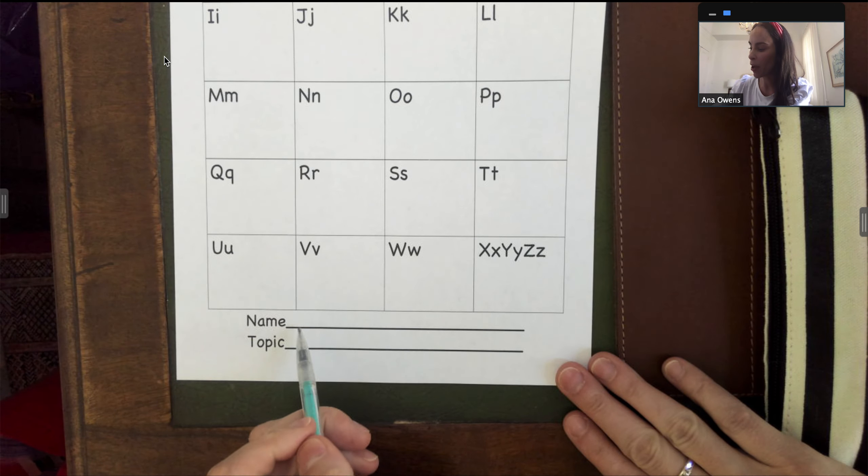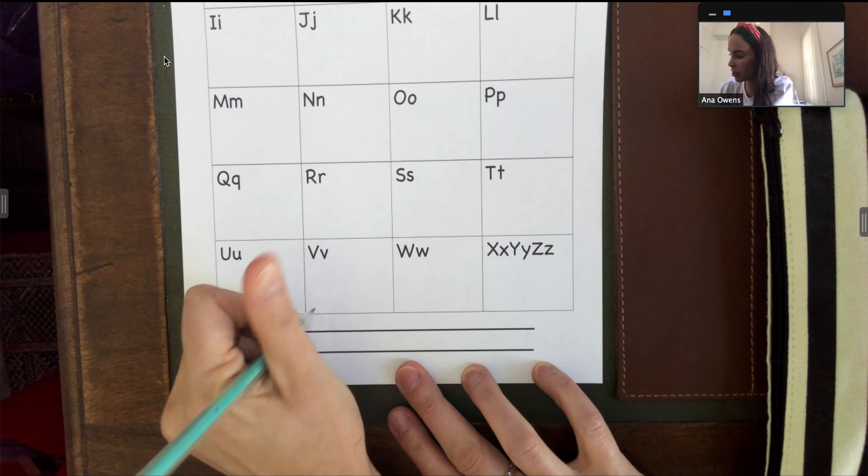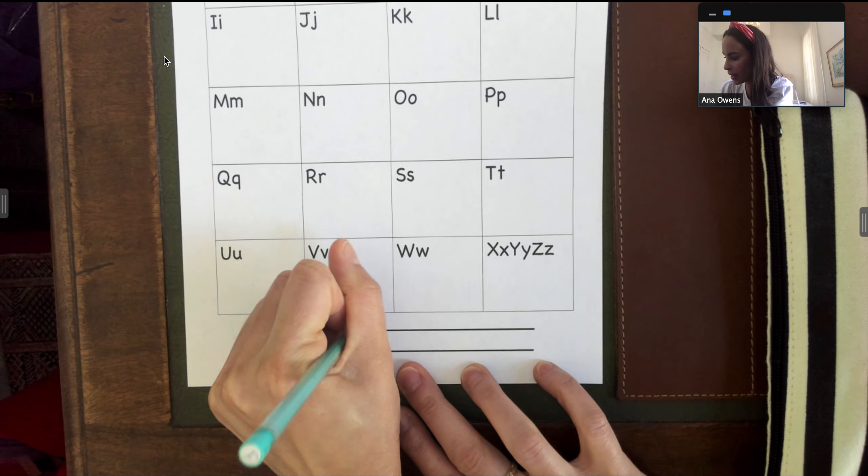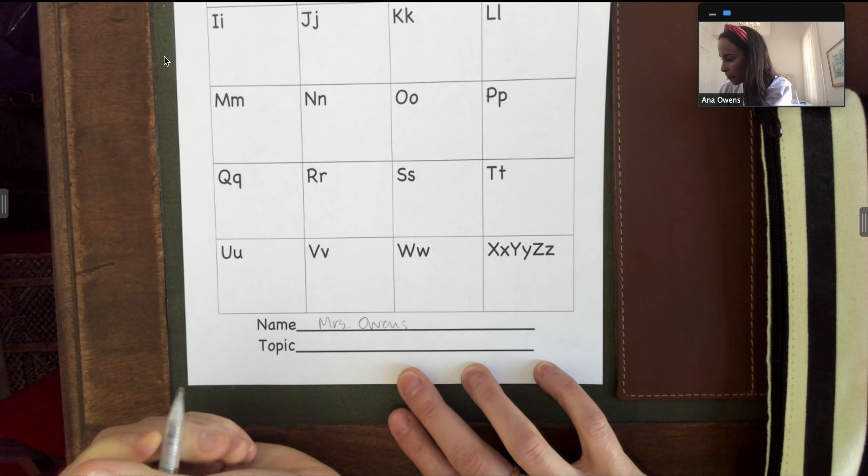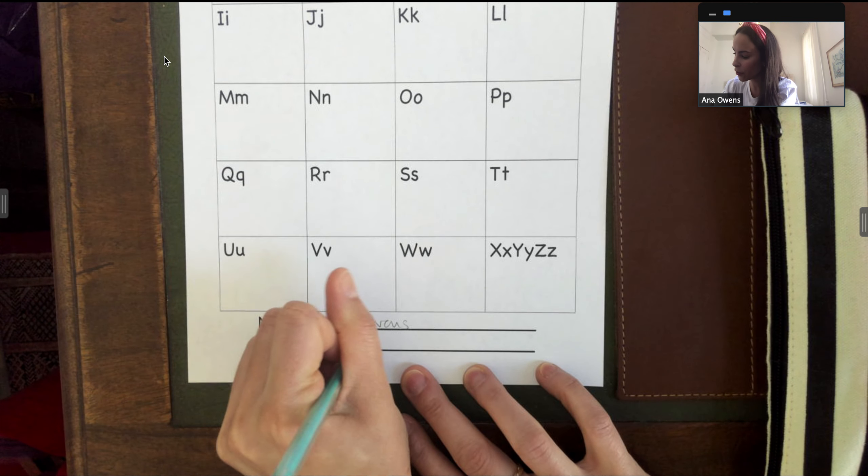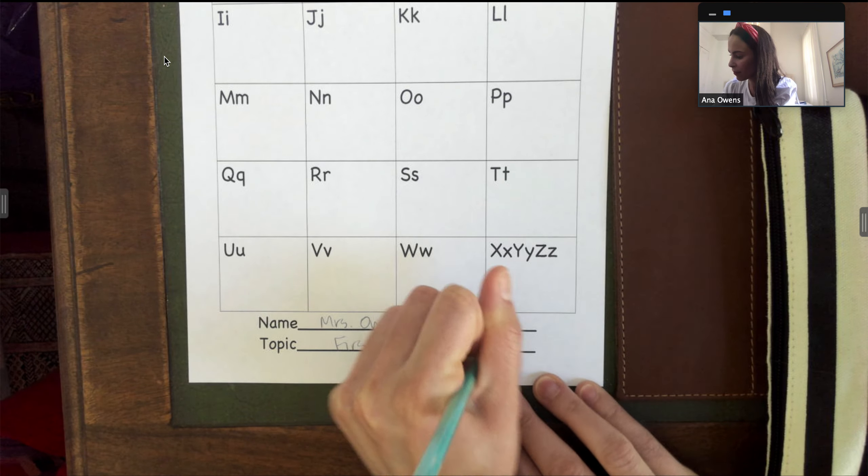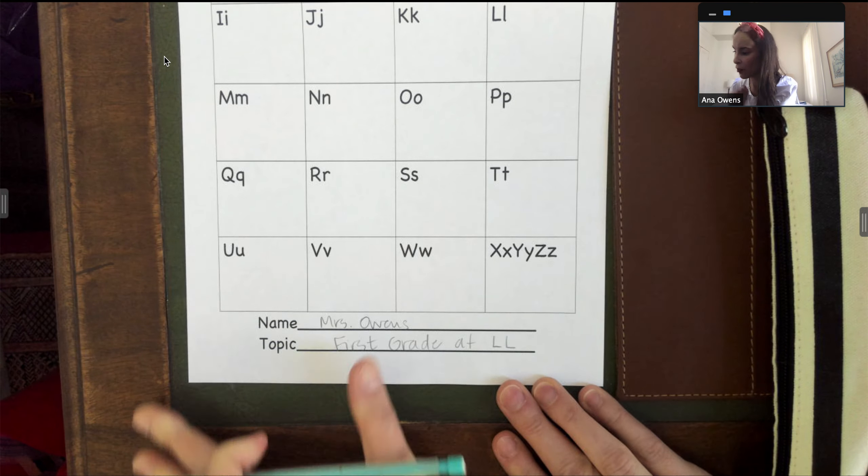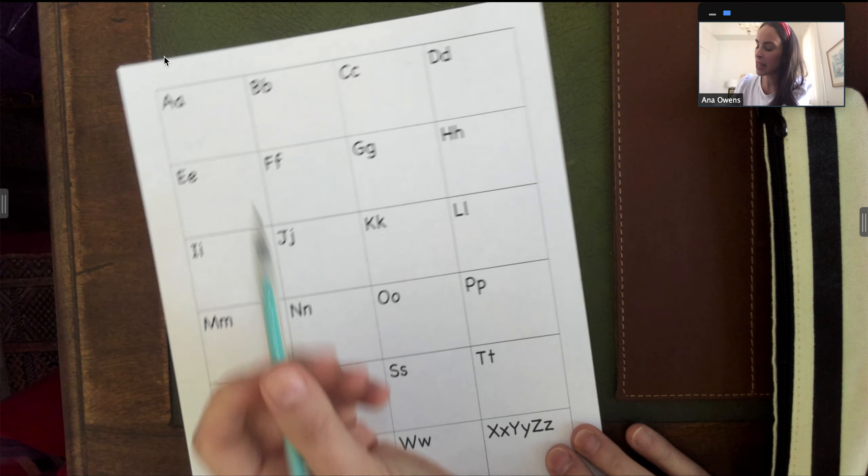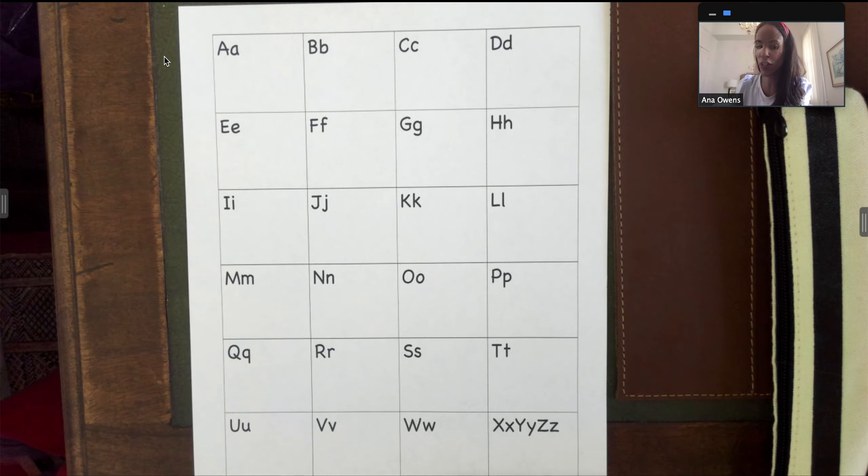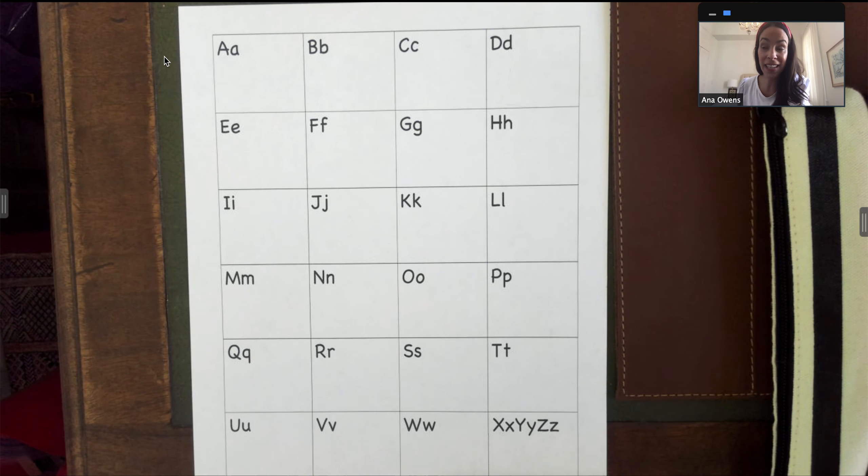At the very bottom you'll notice it says name so I'll write Mrs. Owens and our topic is first grade at Lamplighter. I'm just going to write LL for short. So now I'm going to take some time and I'm going to think of different words that start with these letters and they need to be things that we did in first grade at Lamplighter.